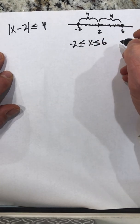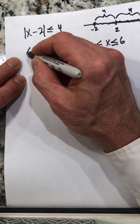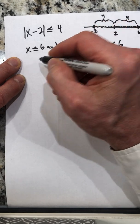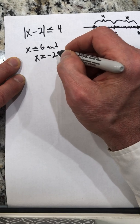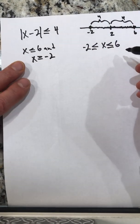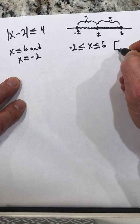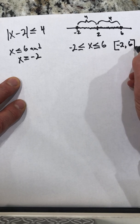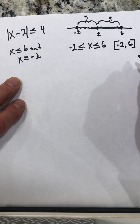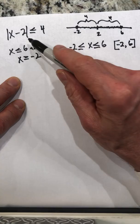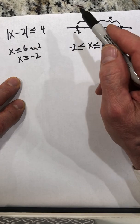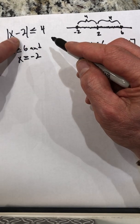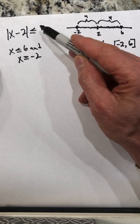Our x values are all numbers greater than or equal to negative two but less than or equal to six. We can also write this as x is greater than or equal to negative two and x is less than or equal to six. In interval notation, we use square brackets to show both endpoints are included: negative two to six. As a check, try x equals four: four minus two is two, the absolute value of two is two, and two is less than four — so it works.